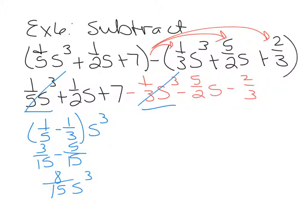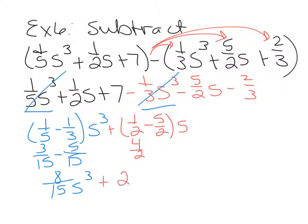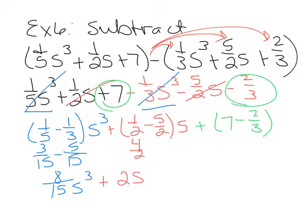Next we have 1/2 s minus 5/2 s. Since they have the same denominator, 1/2 minus 5/2 gives negative 4/2, which reduces to negative 2. So this is negative 2s. The last two terms are 7 and negative 2/3. We convert 7 to 21/3, then 21/3 minus 2/3 makes 19/3.